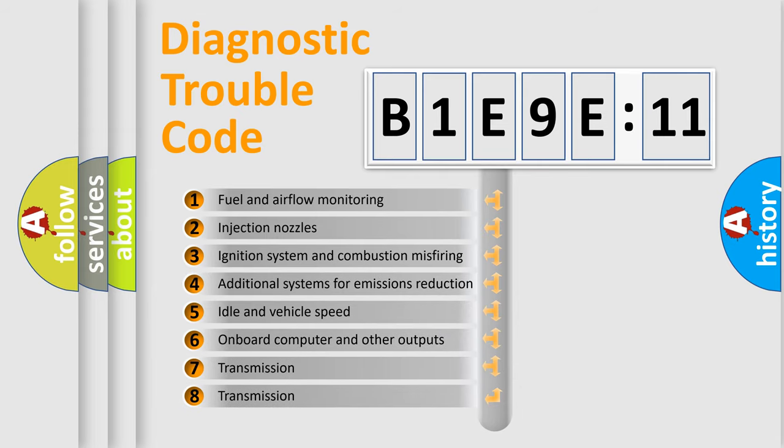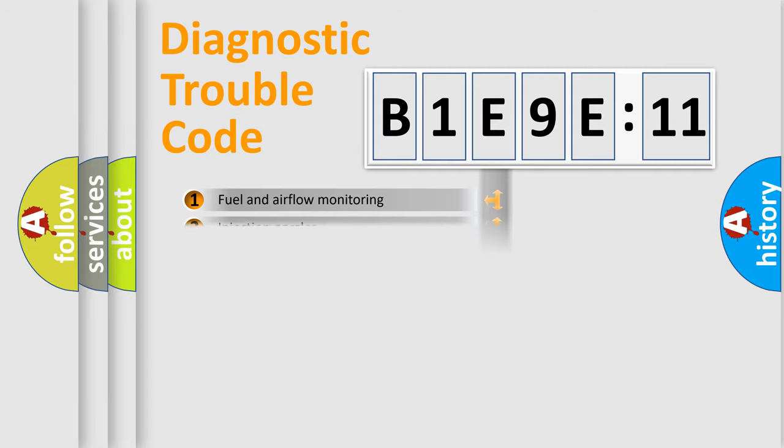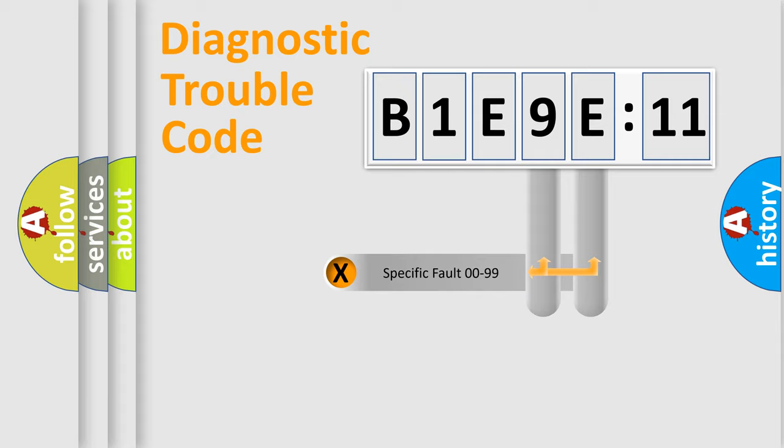The third character specifies a subset of errors. The distribution shown is valid only for the standardized DTC code. Only the last two characters define the specific fault of the group.